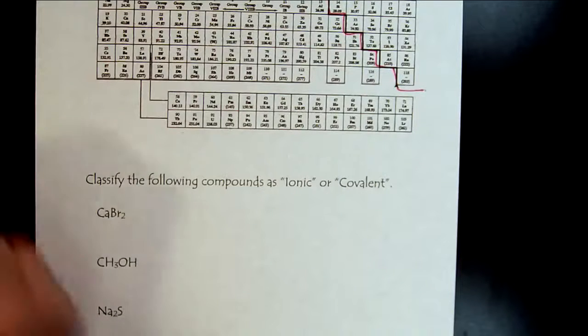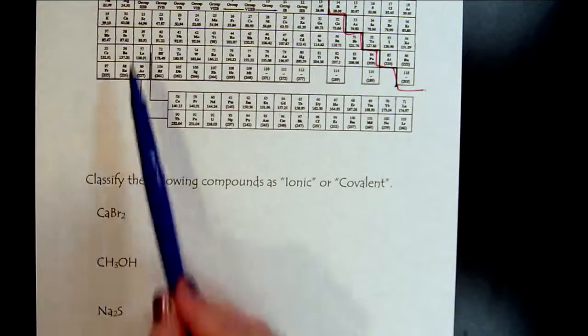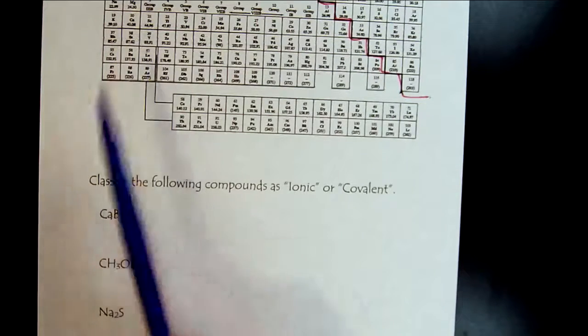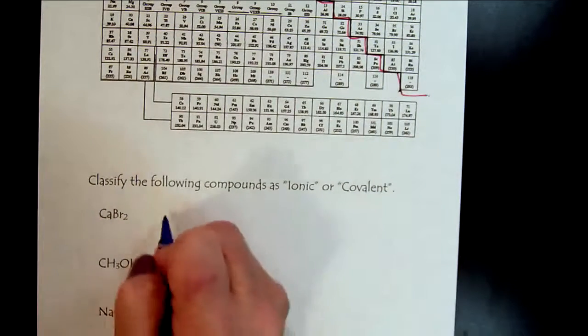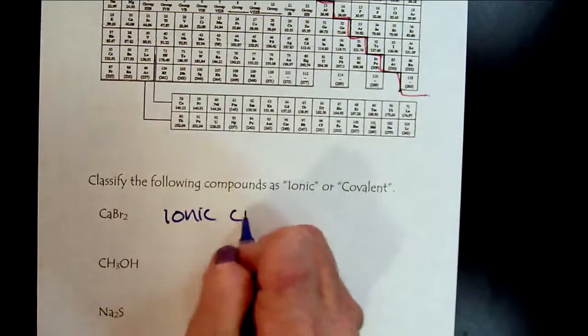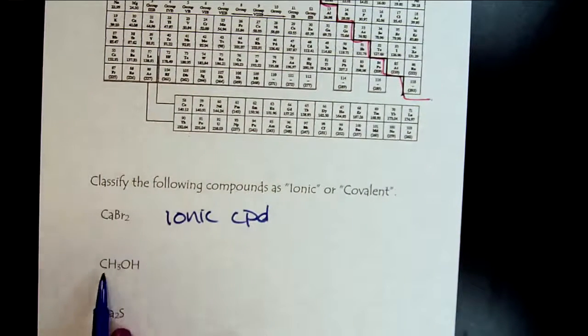If we look here, we see calcium. It's a metal. And bromide is a non-metal. So this is an ionic compound. When we look at this next one.